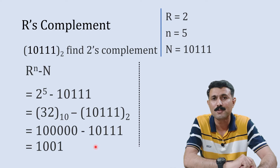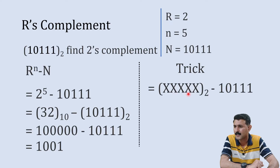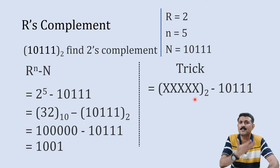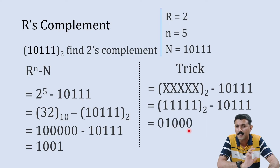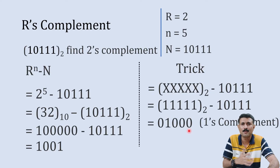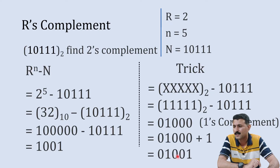Using the binary trick: write the largest binary digit (1) five times — 11111 — and subtract 10111. The result is 01000, which is the 1's complement. Add 1 to get 01001 as the 2's complement — the same answer as before.